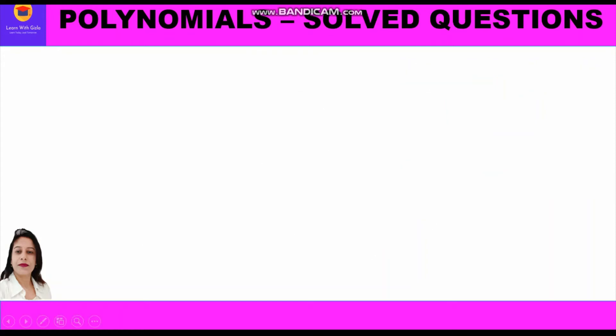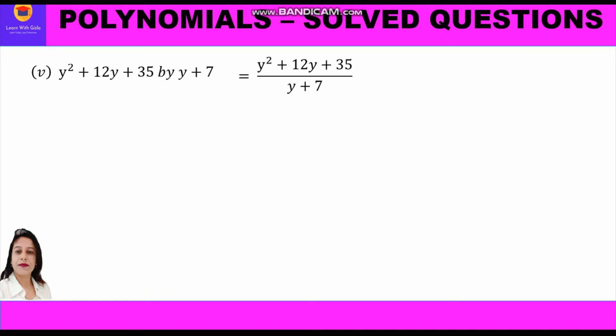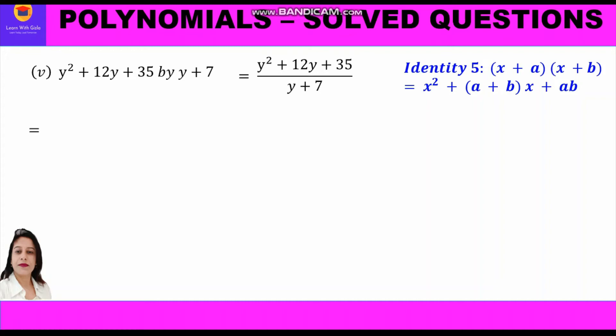Fifth part: divide y squared plus 12y plus 35 by y plus 7. We write in fraction form: (y² + 12y + 35) upon (y + 7). We factorize the numerator using identity 5. We need two numbers whose sum is 12 and product is 35. We know that 7 plus 5 is 12 and 7 times 5 is 35. So a equals 7 and b equals 5.